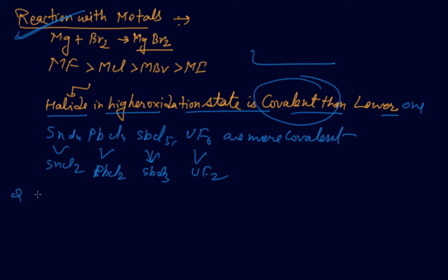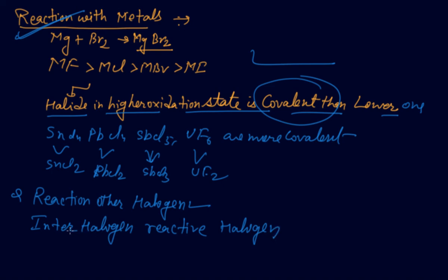Reaction with other halogens: Halogens combine among themselves to form compounds known as interhalogen compounds. Interhalogen compounds are more reactive than normal halogens due to the difference in electronegativity and smaller size. This concludes today's class.